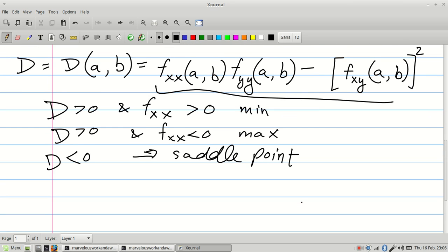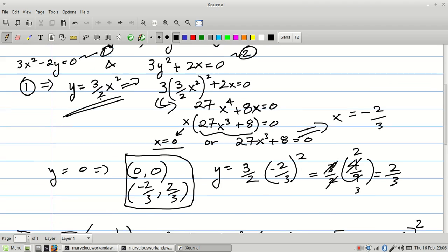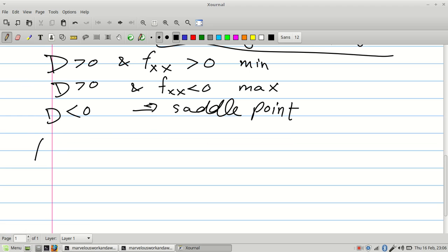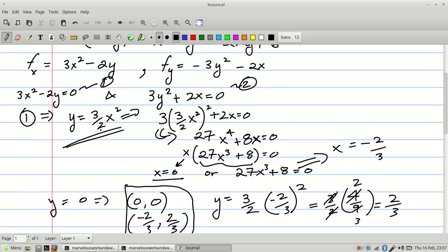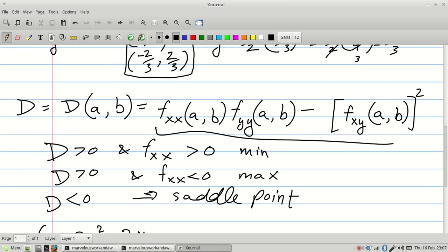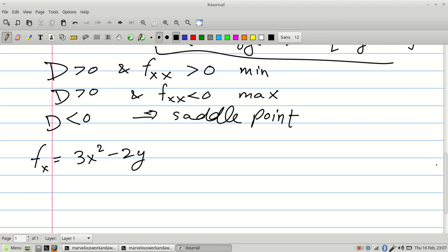So let's figure it out. First of all, we need these second order derivatives. We don't have them right now. I've got Fx equals 3x squared minus 2y, so let me rewrite that: 3x squared minus 2y. And then the other one is negative 3y squared minus 2x.